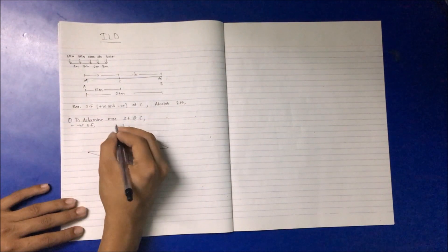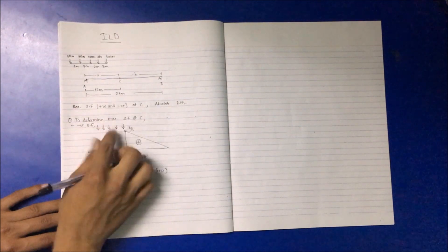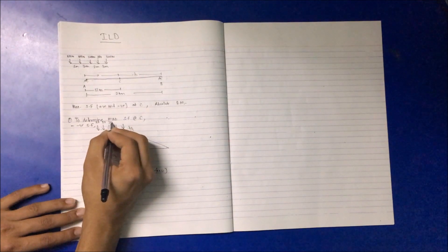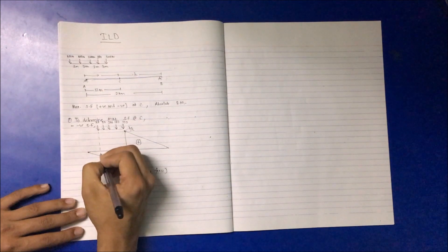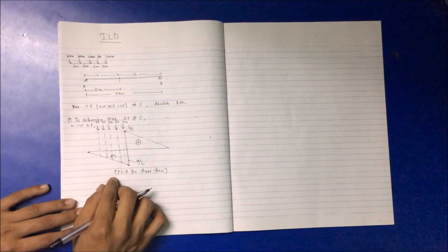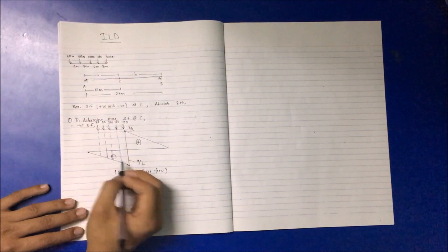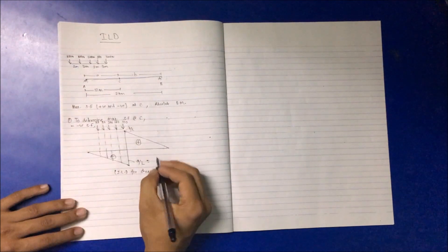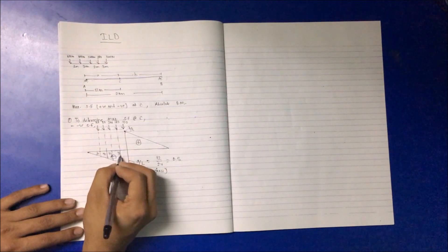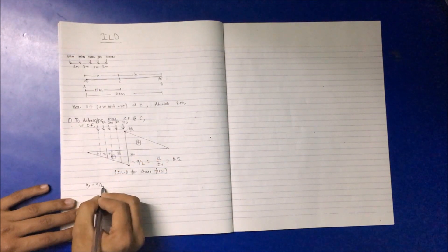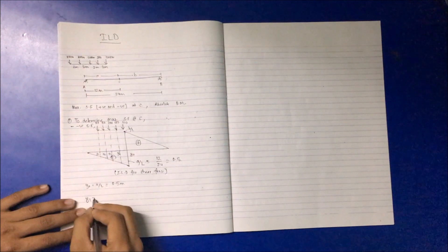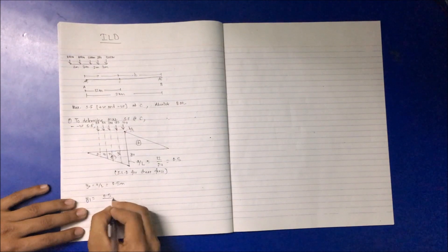We have five sets of loads: 80 kN, 80 kN, 80 kN, 80 kN, 200 kN, 200 kN, and 120 kN acting in the negative portion. Using the property of similar triangles, we can find the ordinates. With A = 12 m and L = 24 m, we get A/L = 0.5. Naming the ordinates y0, y1, y2, y3, y4 — y0 equals A/L = 0.5.